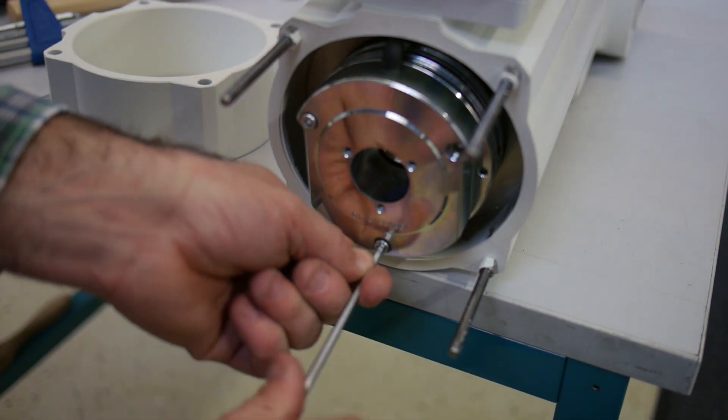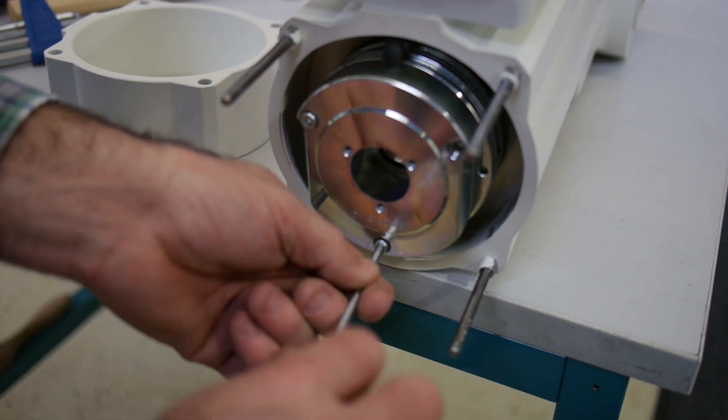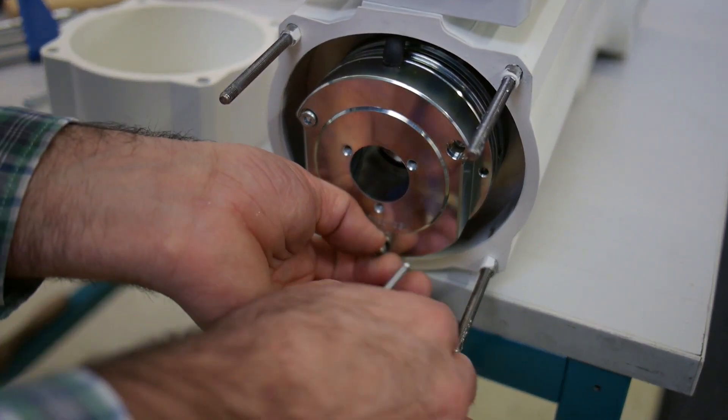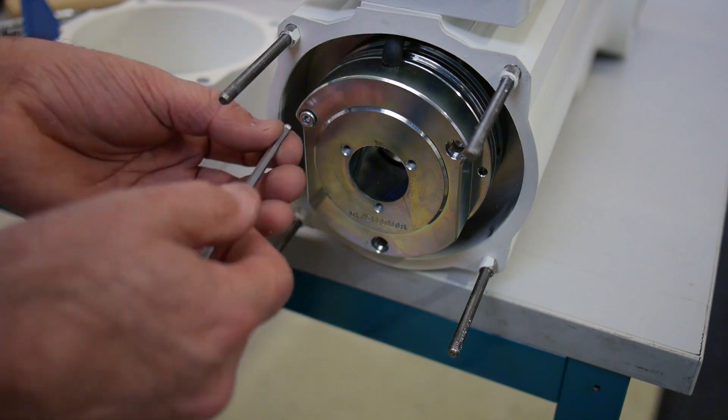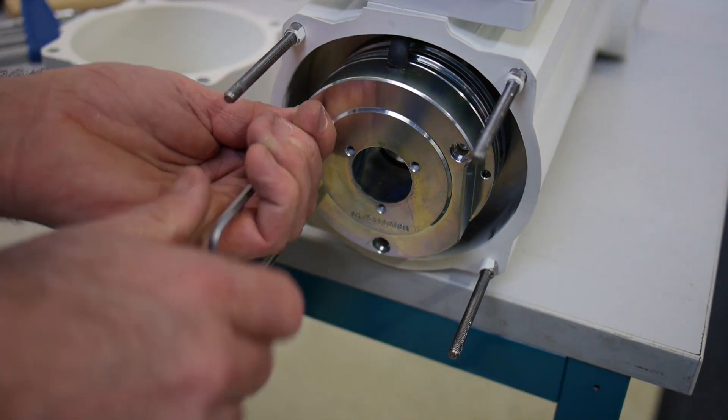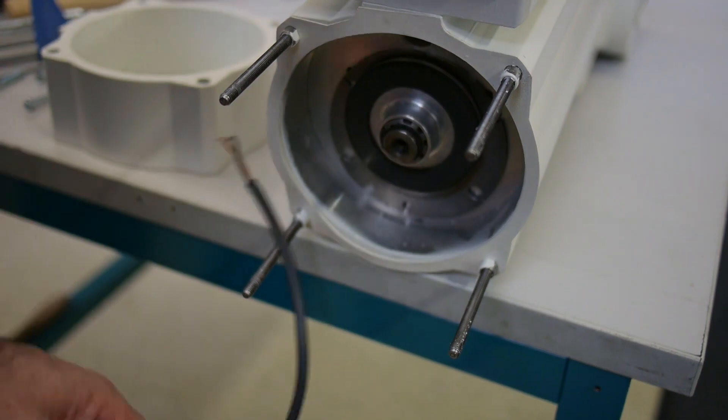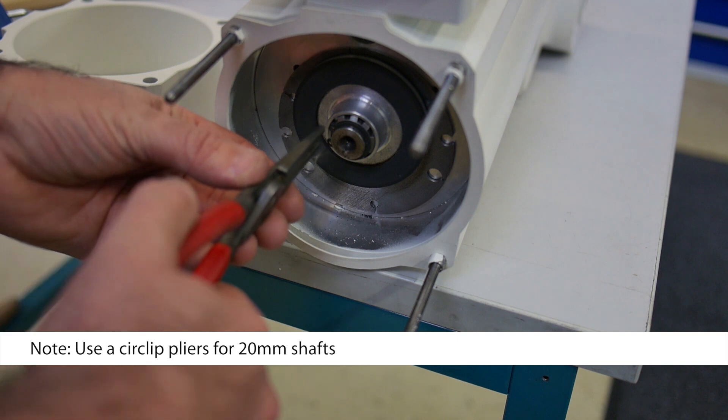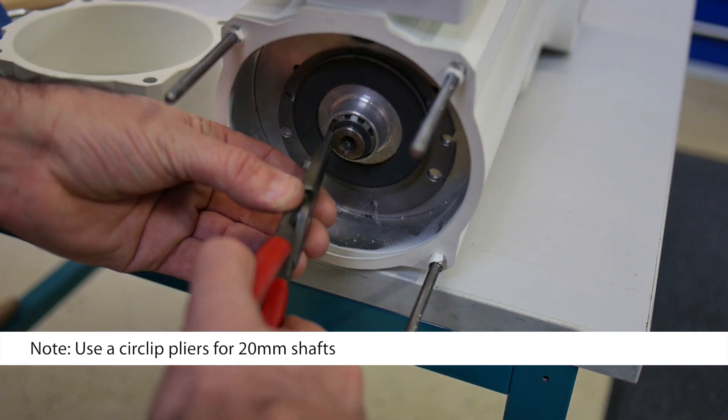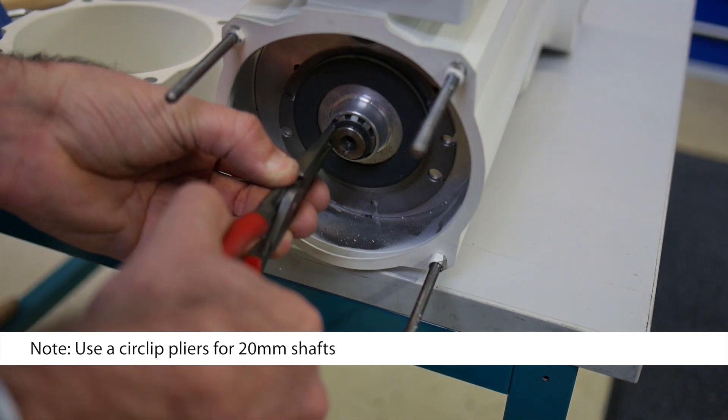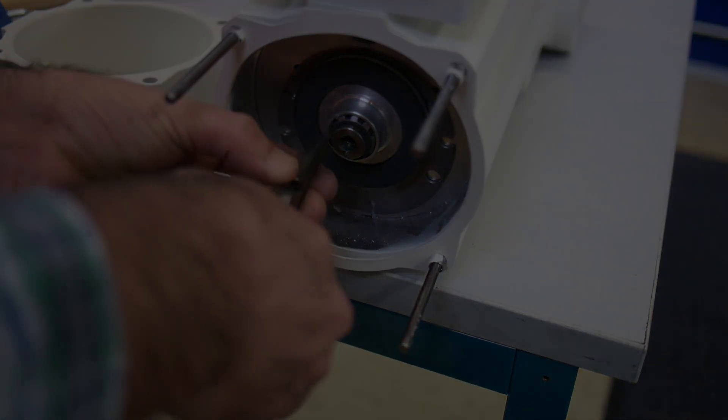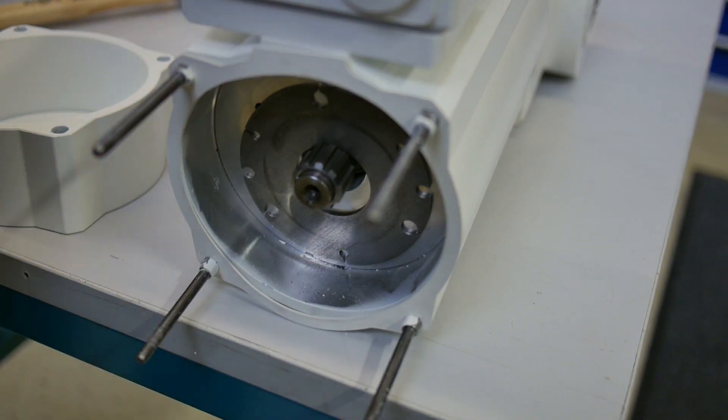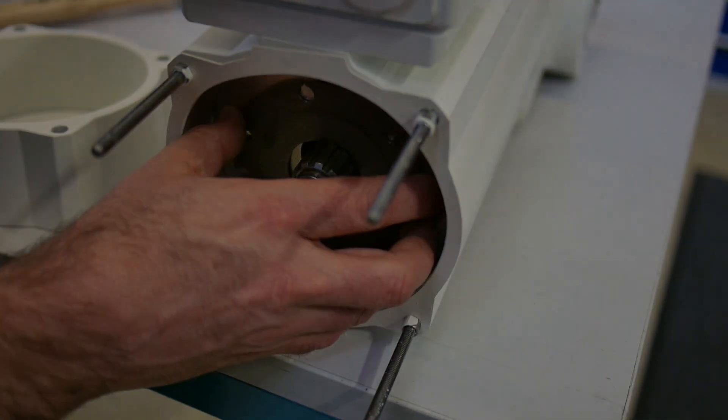Open the three hexagon socket screws on the back side and remove the brake including cable. Remove the circlip from the shafts. Remove the rotor and the friction plate from the hub.